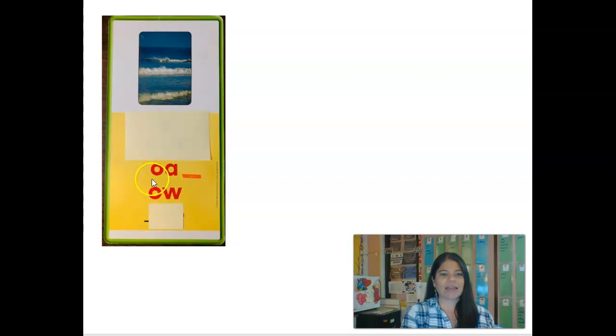The first spelling is OA. This is a vowel pair. When you see OA together it makes the sound O and you'll notice that there's a line at the end of OA.